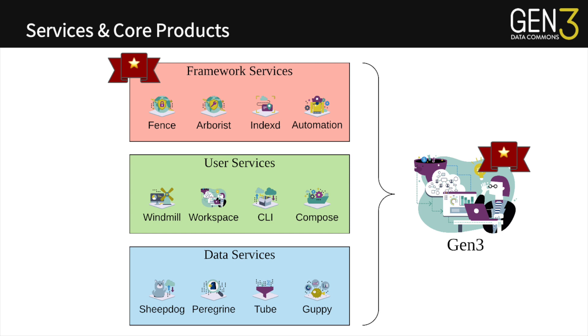Our data services include our underlying ETL service known as Tube, as well as being able to support interfacing with our data over a GraphQL interface, and submitting data dictionaries via Sheepdog and Peregrine. That's a high-level overview of all of our core products and services. You can find out more about these services on our GitHub page, but today we'll talk mostly about our framework services implementation.